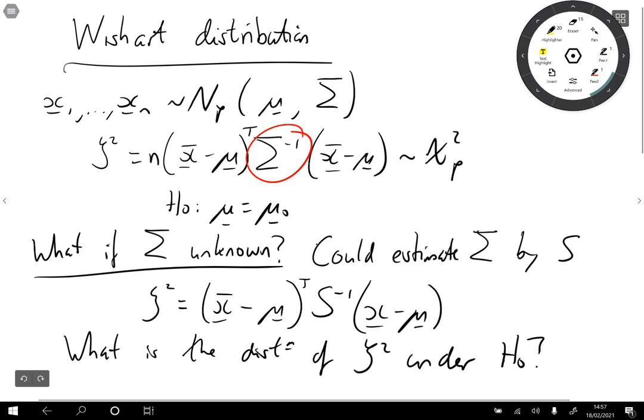Before, when sigma was known, we could work out explicitly that zeta squared has a chi squared distribution. But now, x bar is random and S is random.